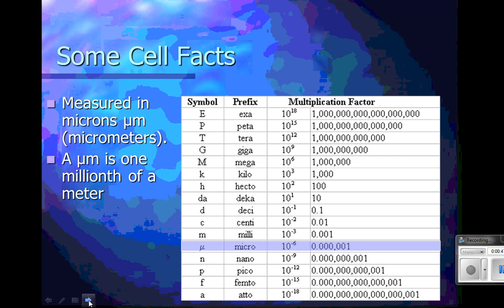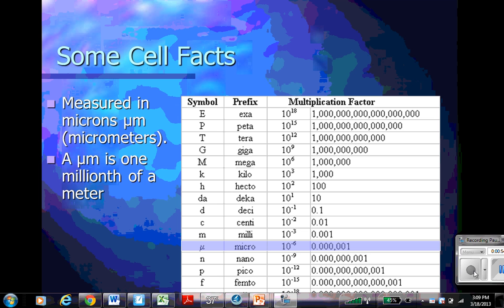Cells are measured in micrometers. A micrometer is one millionth of a meter. So if you took a meter and cut it into a million pieces, one of those pieces would be a micrometer.